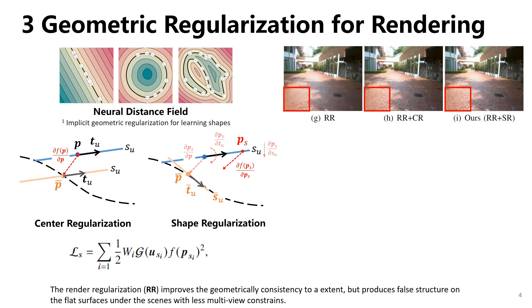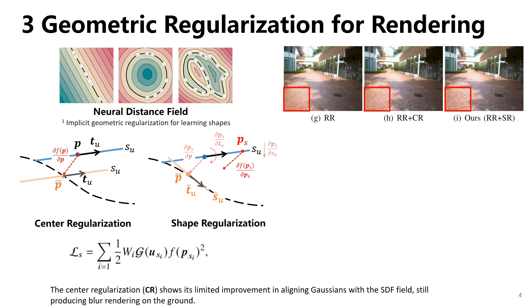The render regularization improves geometric consistency to an extent, but produces false structure on flat surfaces under scenes with less multi-view constraints. The center regularization shows limited improvement in aligning Gaussians with the SDF field, still producing blurred rendering on the ground.